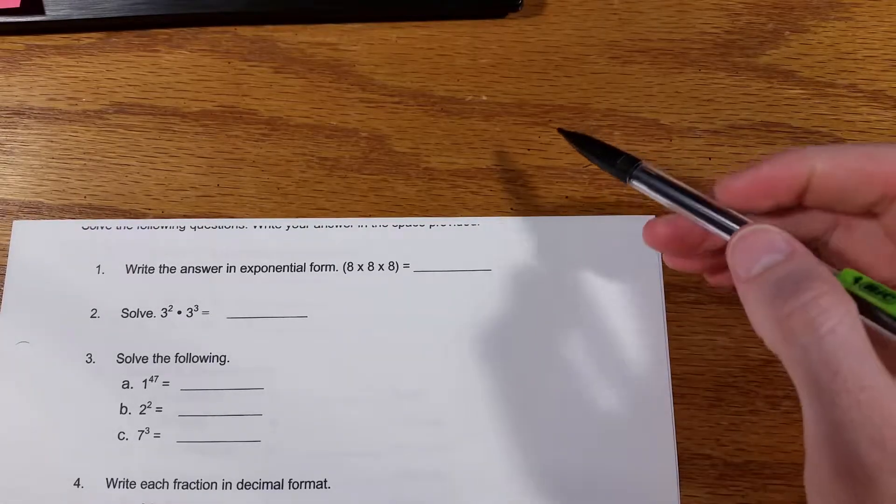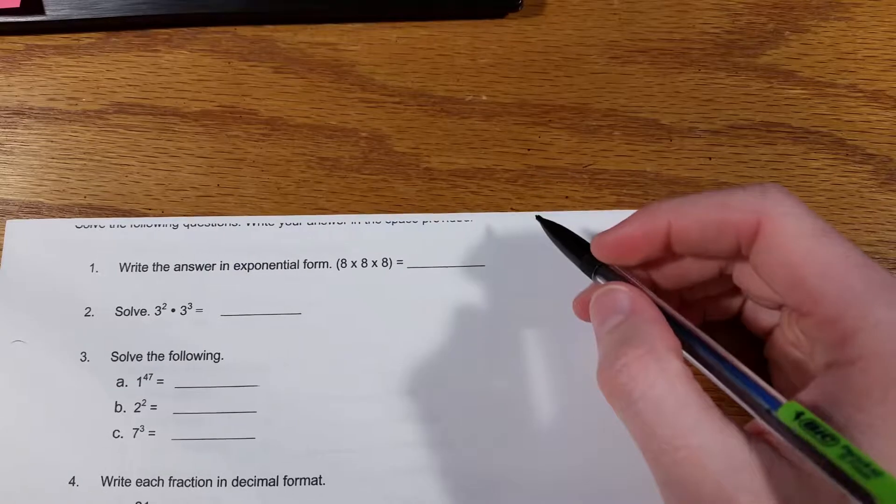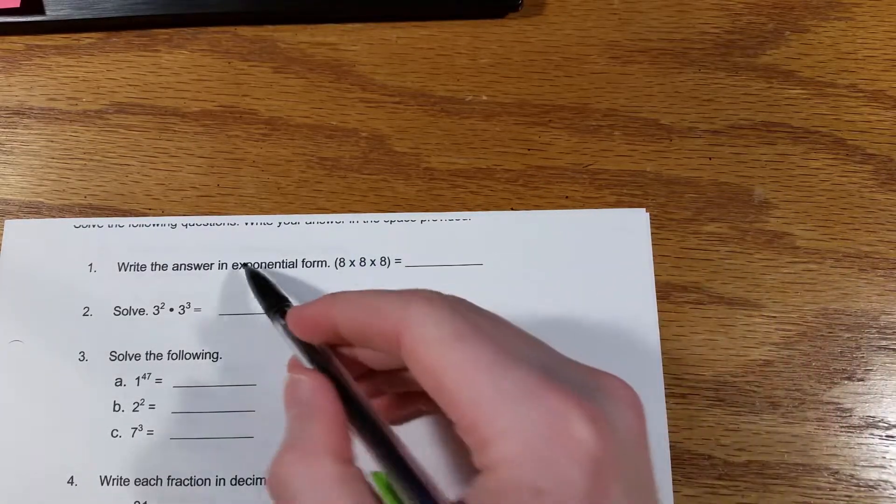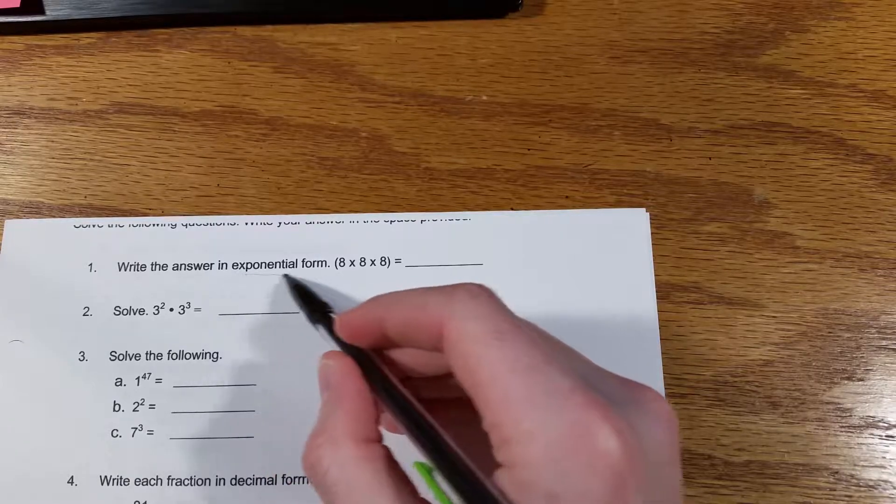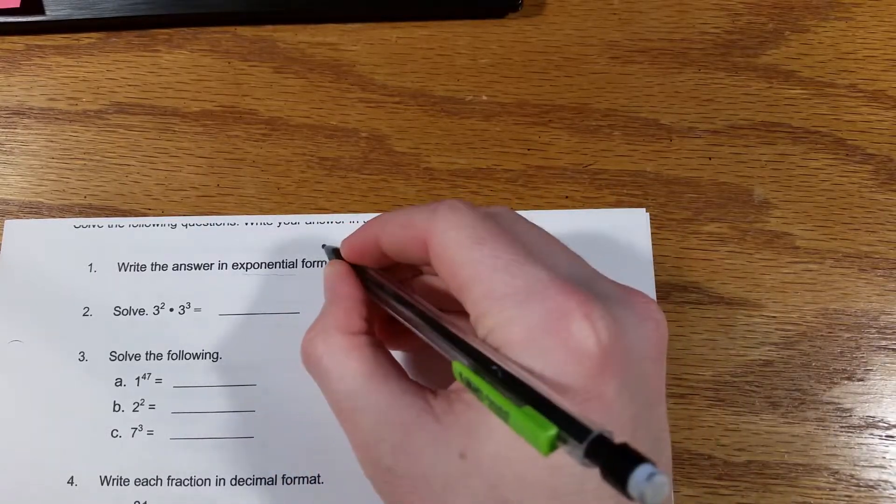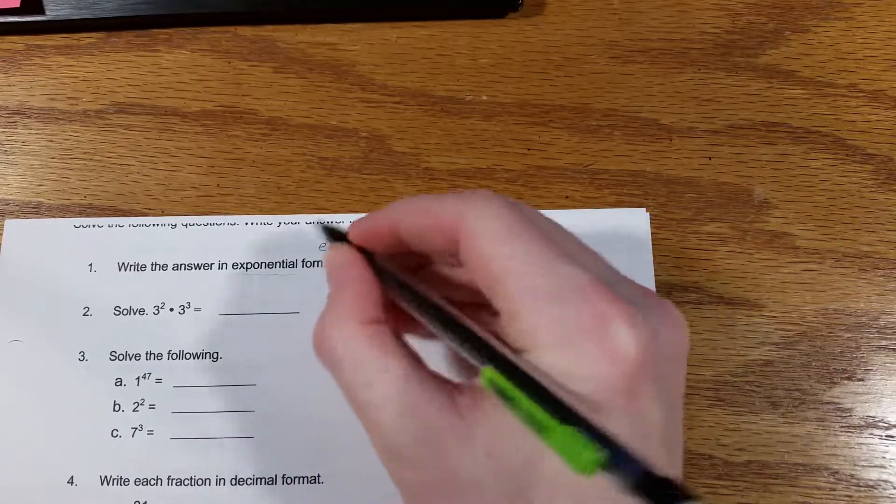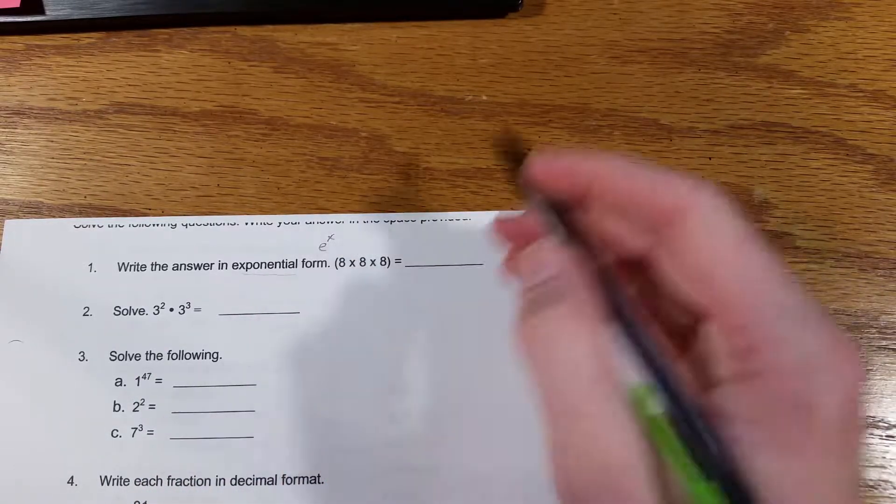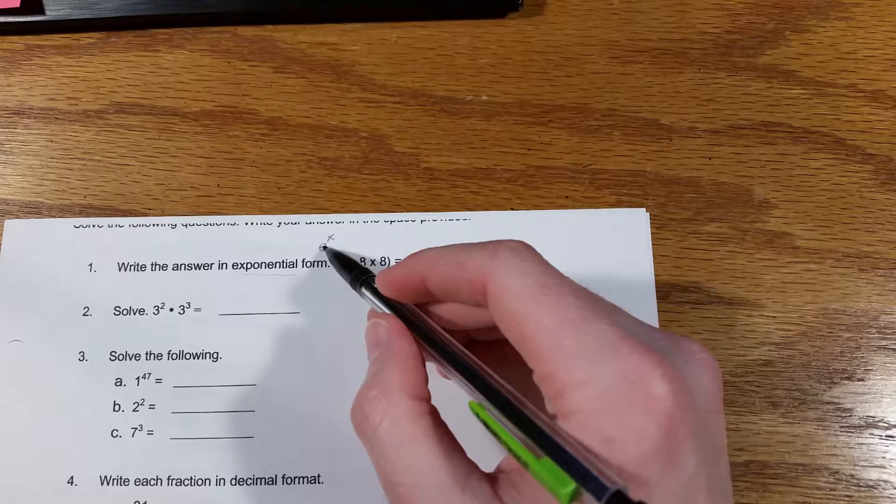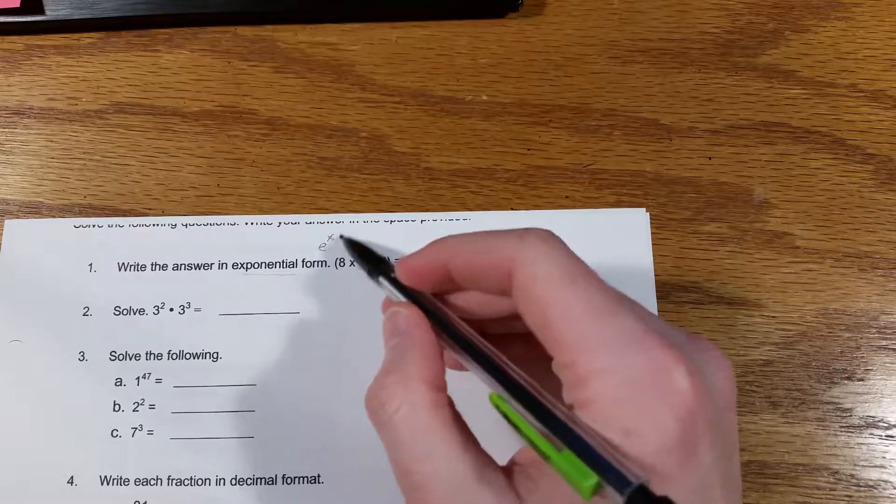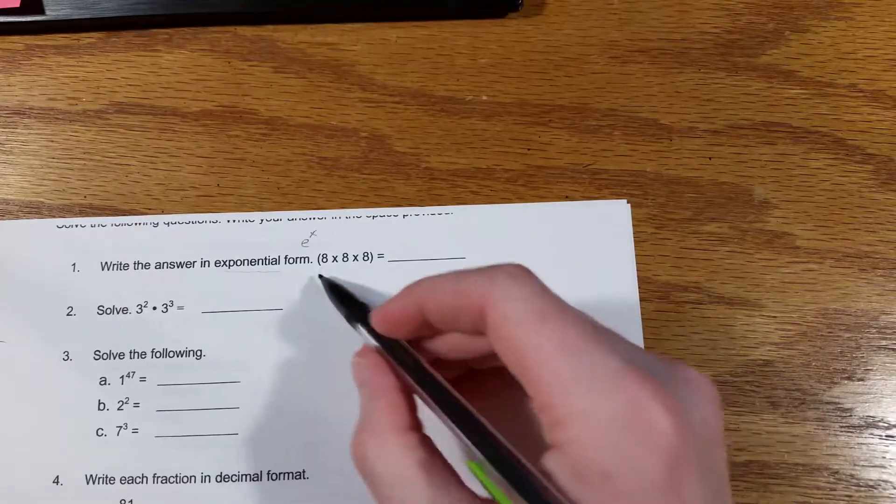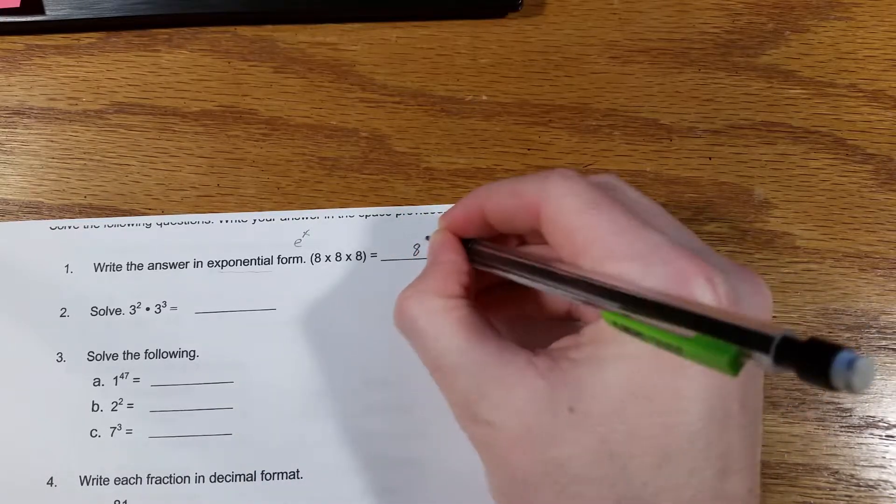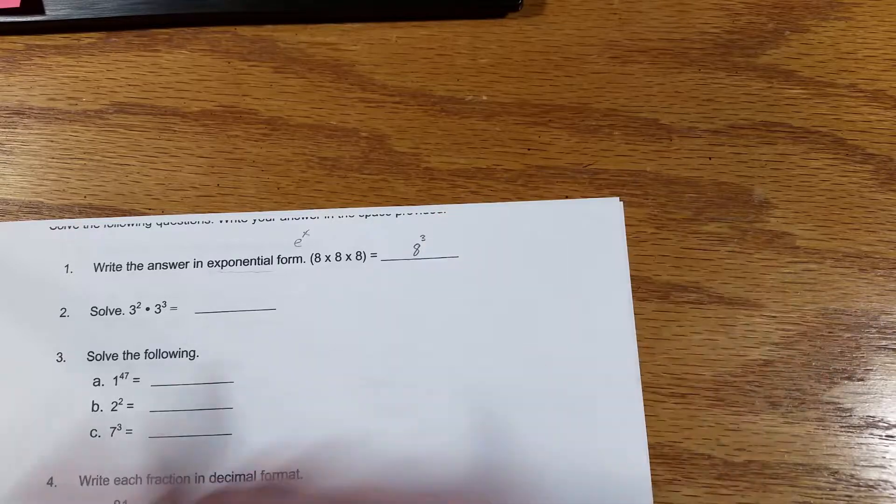Alright, number one, write the answer in exponential form, 8 times 8 times 8. Now exponential form means in the form of something like e to the x, and that means e times itself however many x times. So in order to write this in exponential form, 8 times 8 times 8, that would be 8 times itself 3 times.